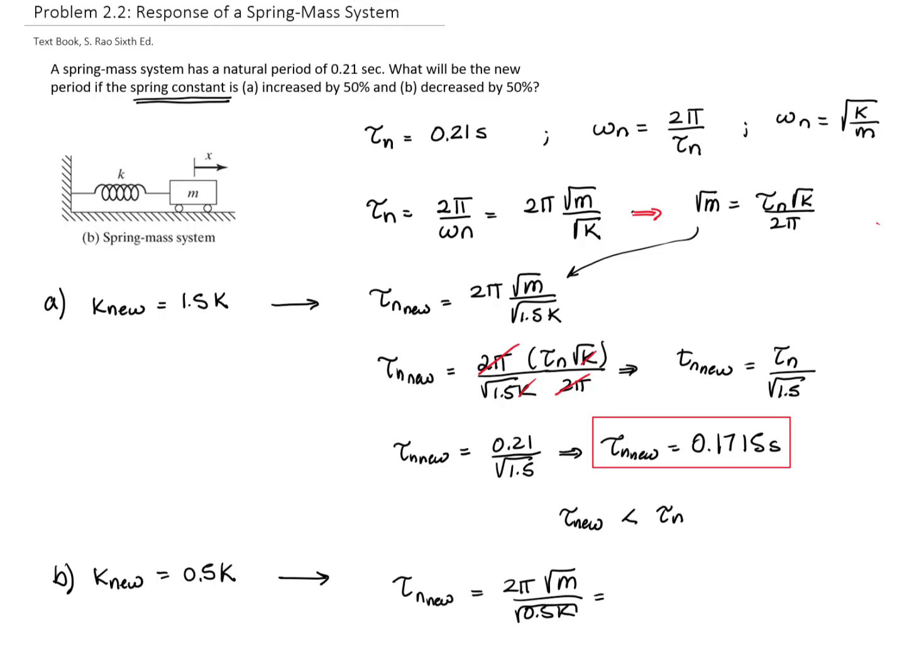And again we substitute the mass, and the mass is the original period times the square root of K divided by 2π. We cancel out the 2π and K.